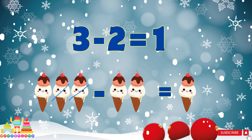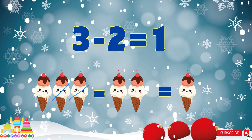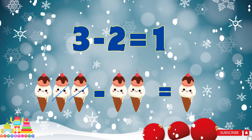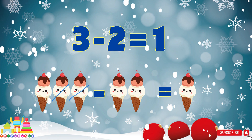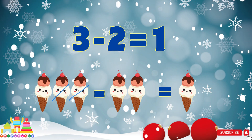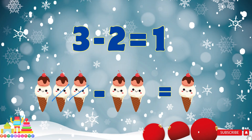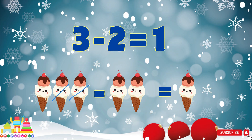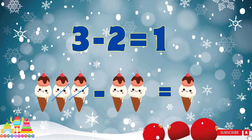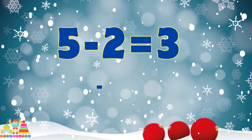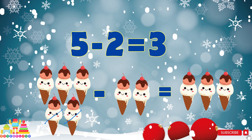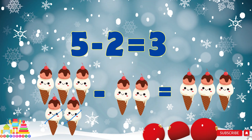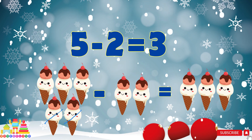Three minus two equals one. Subtract two ice creams from three ice creams, left one ice cream. One, two, three — cut down two ice creams, left one ice cream.